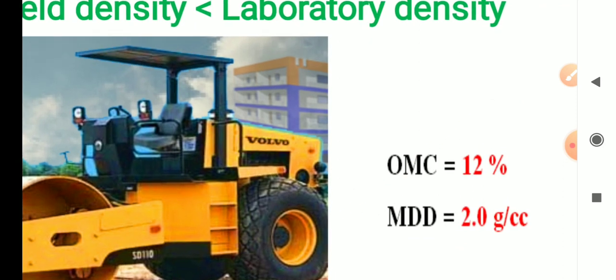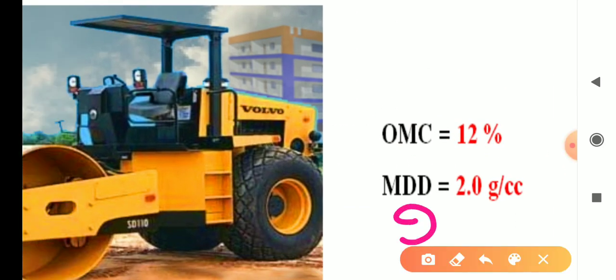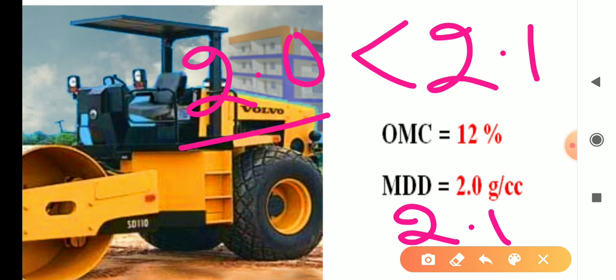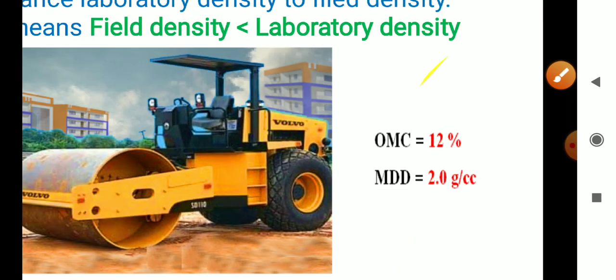The lab MDD is 2.1 g/cc but in the field we are getting 2.0. After three to four passes we get 1.9, then after more passes we get 2.0. If we pass the roller too many times it may exceed 2.1, so once we get 2.0 — which is near to 2.1 — we stop the roller passes.